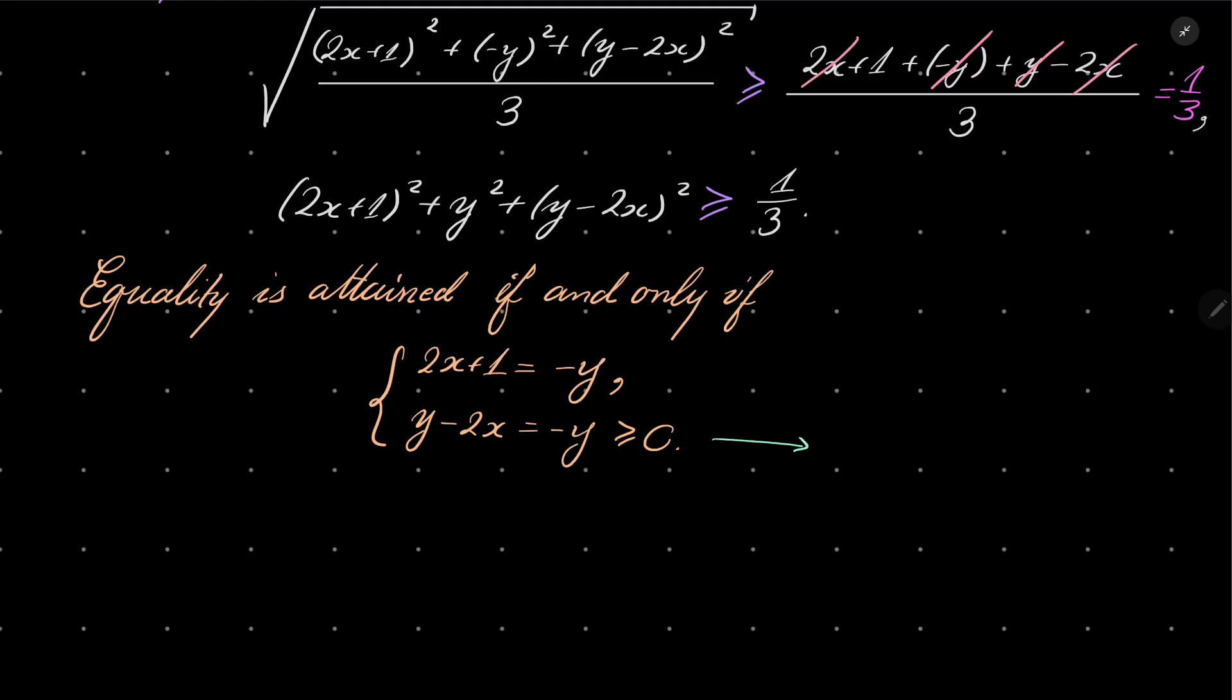From the last condition we see that in fact x equals y, and this is non-positive, because -y ≥ 0, so we can flip the sign.